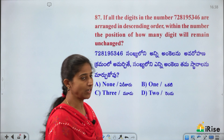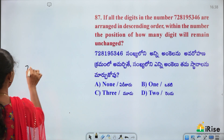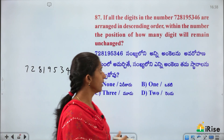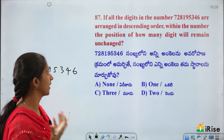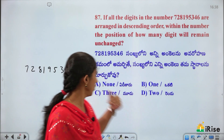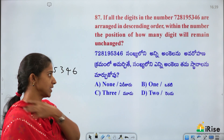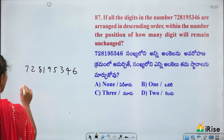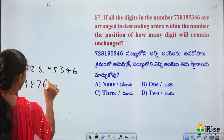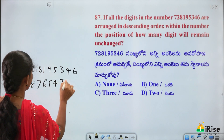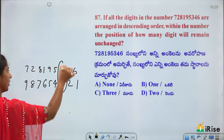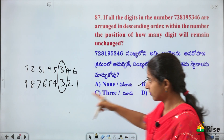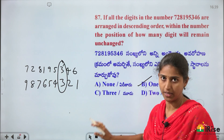Number 72,819,5346 — arrange all digits in descending order within the number. Descending order of digits: 9, 8, 7, 6, 5, 4, 3, 2, 1. Comparing with the original number, only the digit 3 remains in the same position. Answer: 1 digit remains unchanged.